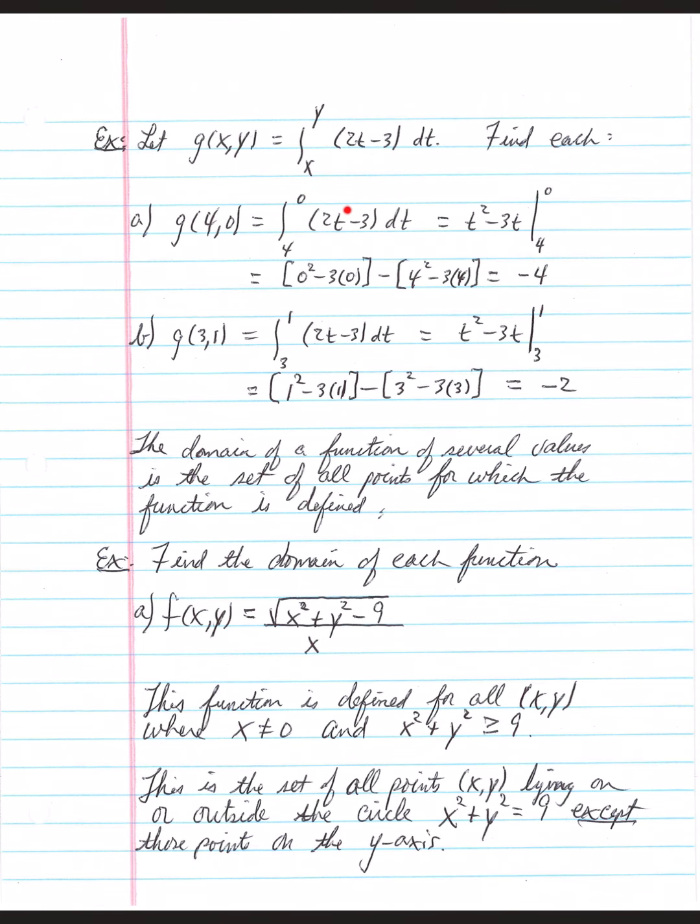The antiderivative of 2t minus 3 is t squared minus 3t. And by fundamental theorem of calculus, we sub a 0 in, minus, and then we sub a 4 in. 0 minus 4 is negative 4.